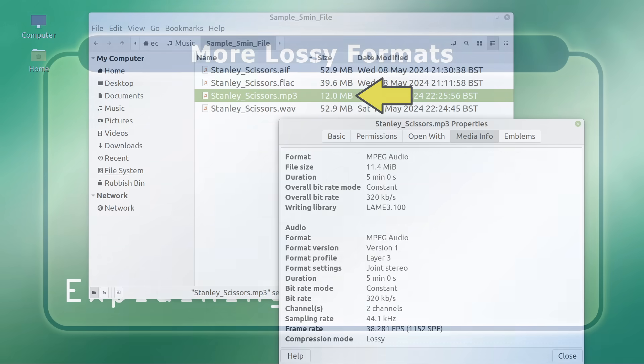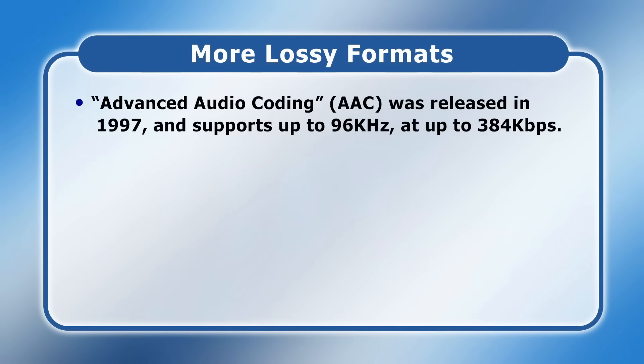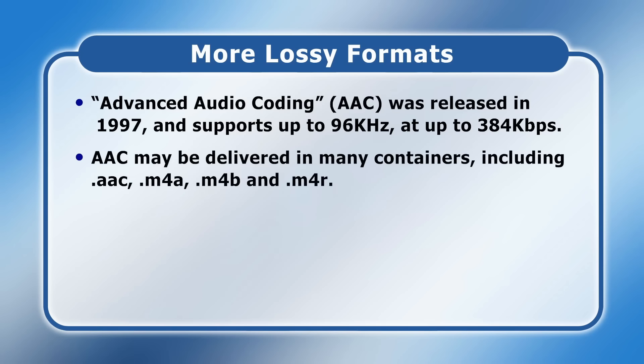As an improvement to MP3, Advanced Audio Coding or AAC was released in 1997 and supports a sampling rate up to 96 kHz and a data rate of up to 384 kbps. However, these parameters are not supported by all streaming services. AAC audio may be delivered in many containers, including AAC, M4A, M4B and M4R.